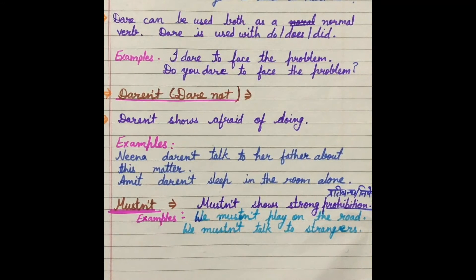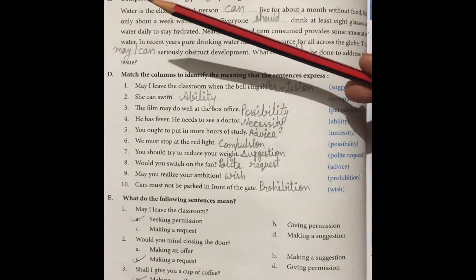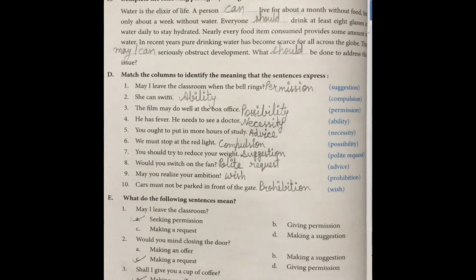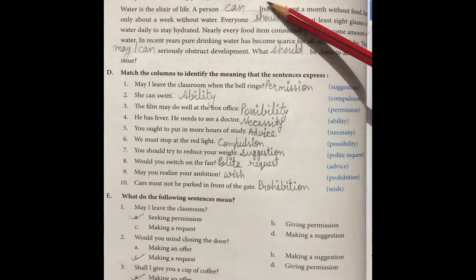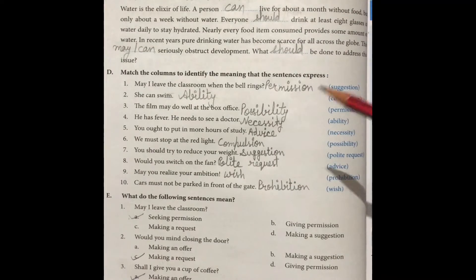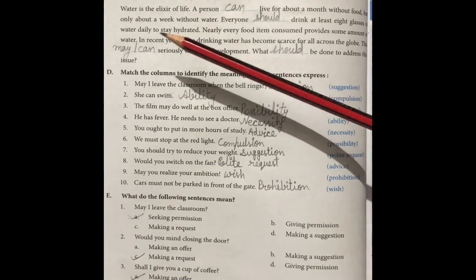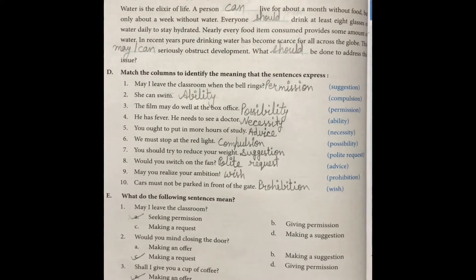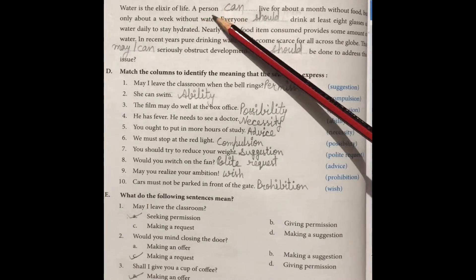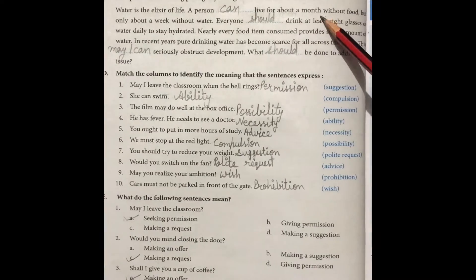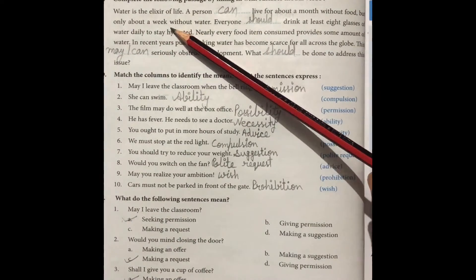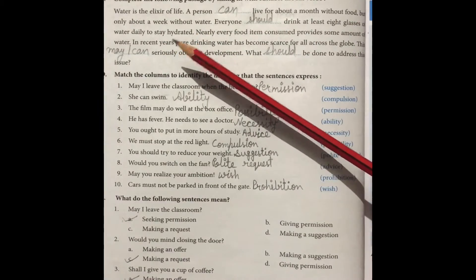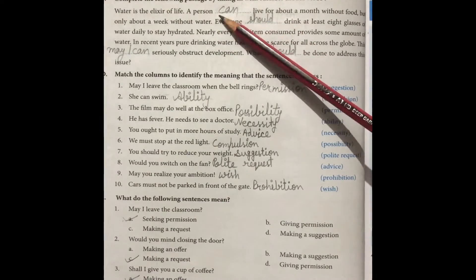I hope you have understood. Now let's see the book exercise related to these helping verbs — Exercise C, given on page 38 in your grammar book: 'Complete the following passages by filling in with suitable modal verbs.' Water is the elixir — Alexa का meaning होता है Amrit of life, जो पानी है वो जीवन के लिए अमृत है. 'A person can live for about a month without food, but only about a week without water.' एक इंसान खाने के बिना एक महीना रह सकता है, लेकिन पानी के बिना केवल one week जिंदा रह सकता है — so put here 'can'.